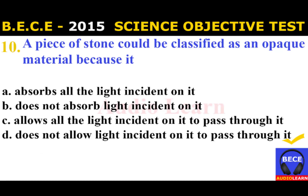Number 10: A piece of stone could be classified as an opaque material because it A. Absorbs all the light incident on it, B. Does not absorb light incident on it, C. Allows all the light incident on it to pass through it, D. Does not allow light incident on it to pass through it. The answer is D. Does not allow light incident on it to pass through it.